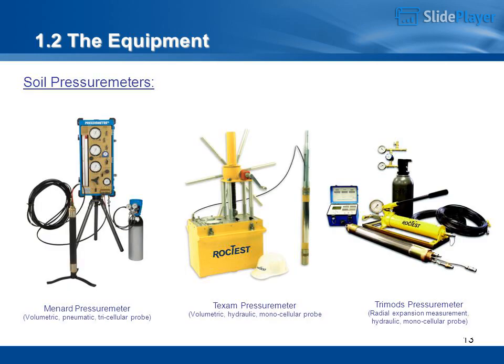Soil pressuremeter models include: the Texam pressuremeter — volumetric, hydraulic, monocellular probe; the Monad pressuremeter — volumetric, pneumatic, tricellular probe; and the Trimmeds pressuremeter — radial expansion measurement, hydraulic, monocellular probe.